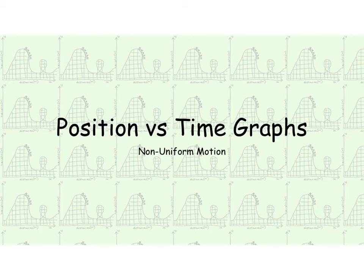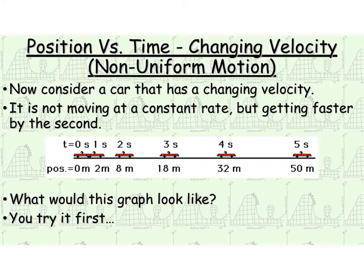Let's talk about position versus time graphs when we're talking about non-uniform motion, so basically when we have acceleration. On a position versus time graph, if you have changing velocity, that means we are no longer in uniform motion. Our velocity is changing, and it's no longer moving at a constant rate — it's getting faster by the second. That's one version of changing velocity.